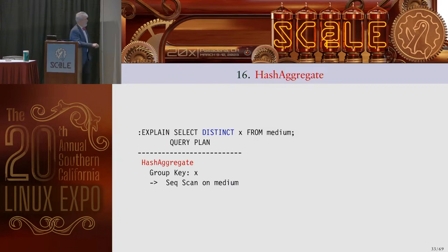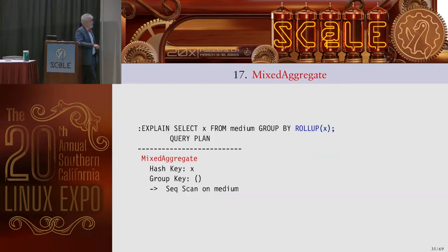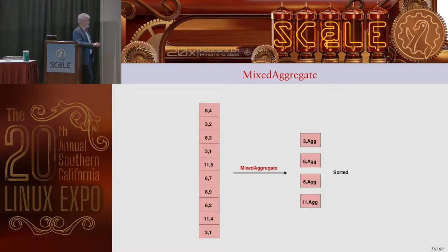Hash aggregate: you hear this one a lot, typically with the DISTINCT keyword. We take the value, hash it, and find all unique values — effectively doing DISTINCT on the first column via hashing. Rollup is a mixed aggregate that allows rolling up multiple entries into a hash and returning an aggregate. Unlike regular hash aggregate where results come out randomly, rollup produces a sorted result because of how rollup works.